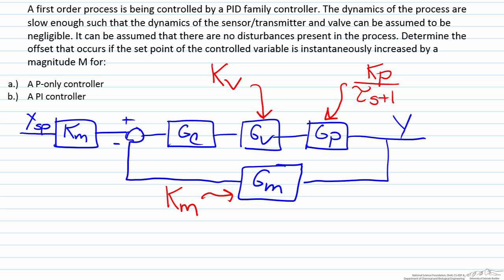For the controller we're given that we have a P only controller and a PI controller, so for the P only controller we'll be looking at Kc, and for a PI controller we'll be looking at Kc times one plus one over tau_i s. And these are the transfer functions for a P only and a PI controller respectively.